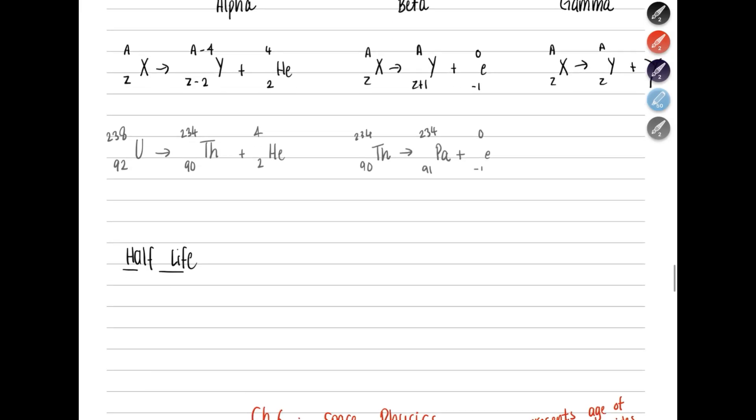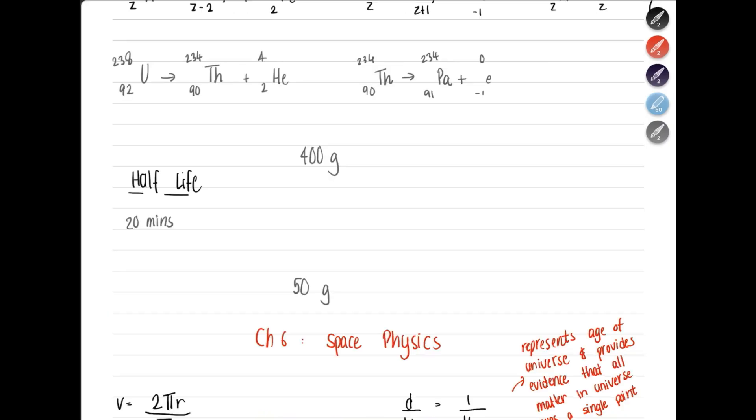Then, you also have the concept of half-life. Half-life of an isotope is basically the time taken for half of the nuclei of that isotope in any sample to decay. Let's have a look at this example. Let's say you have a radioactive substance of 400 grams. It has a half-life of 20 minutes, and then after some time, you see that this has reduced to 50 grams. They are asking you to calculate how many half-lives have passed.